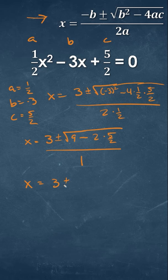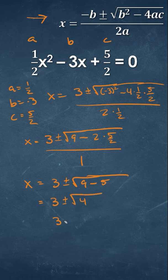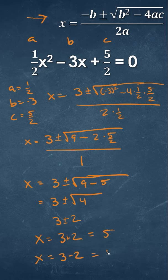So we can simplify this to 3 plus or minus the square root of 9 minus 5, all over 1. That simplifies to 3 plus or minus the square root of 4, which simplifies to 3 plus or minus 2. So that means we're going to have two values for x: the first one is going to be 3 plus 2, and the other one will be 3 minus 2. So our answers will be 5 and 1.